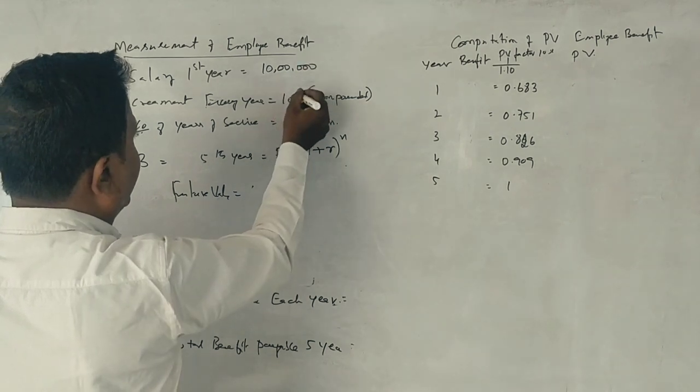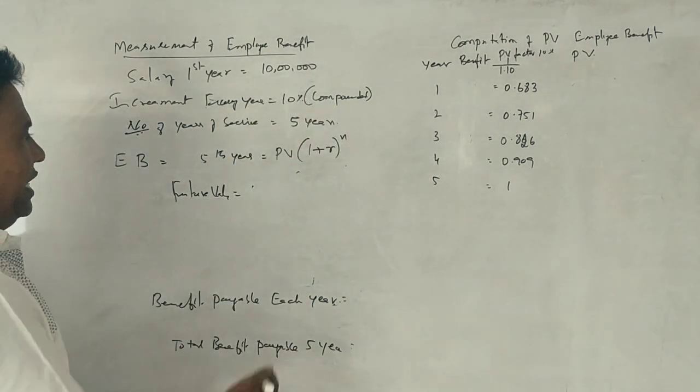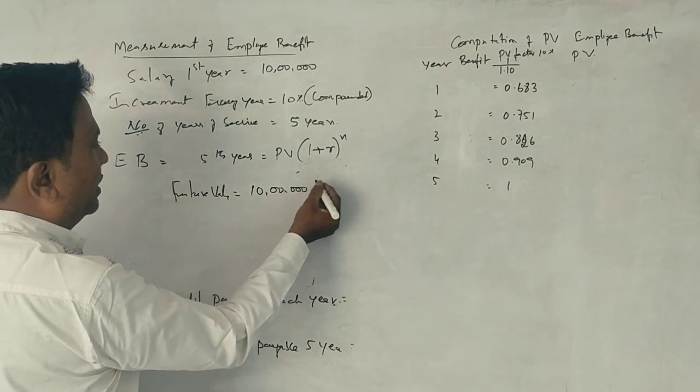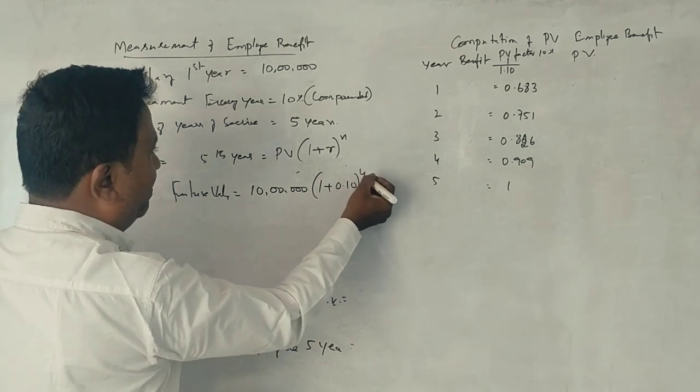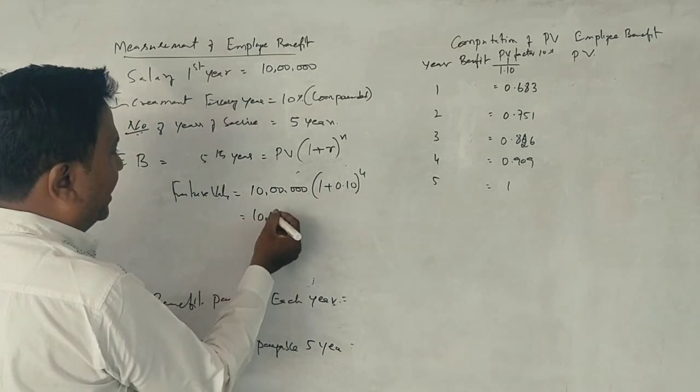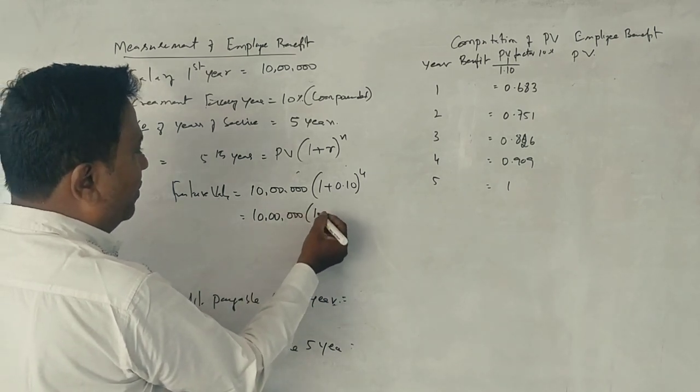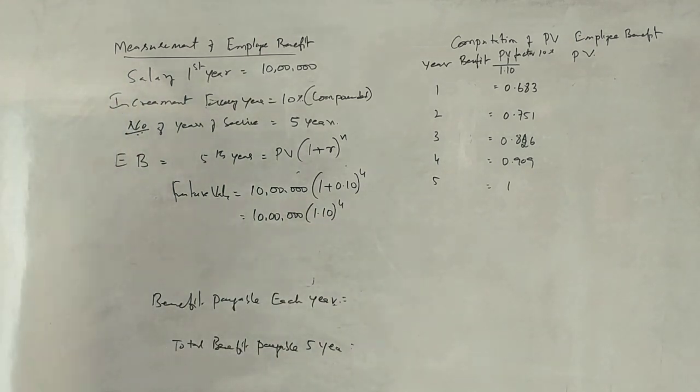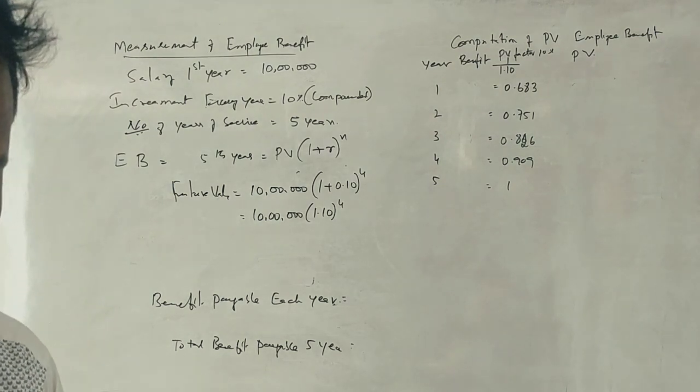So first year salary is 10 lakh rupees, increment is 10%, number of years is 5 years. Future value is 10 lakh rupees into 1 plus 0.10 to the power of 4. That is 10 lakhs into 1.10 to the power of 4, which equals 1.1 into 1.1 into 1.1 into 1.1 equals 1.4641.